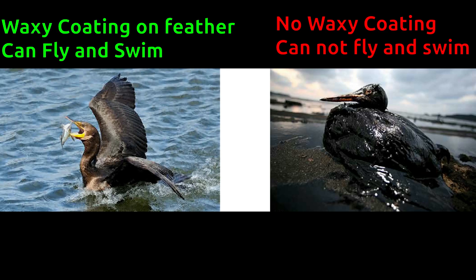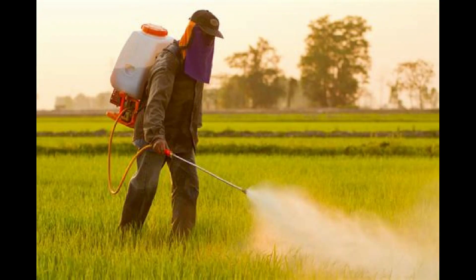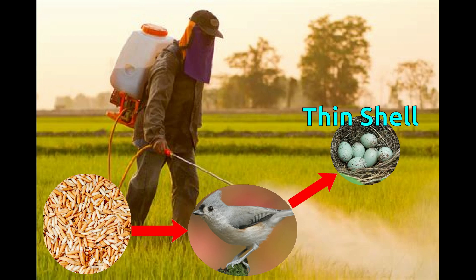Without the waxy coating, water seeps inside the feathers and makes it hard for seabirds to fly, leading to drowning and death. Grains become contaminated due to excessive use of pesticides and become harmful for birds. Due to the effect of pesticides, birds lay eggs with very thin shells, and weak shells result in the eggs breaking easily, causing the death of baby birds.